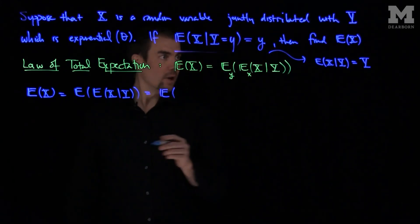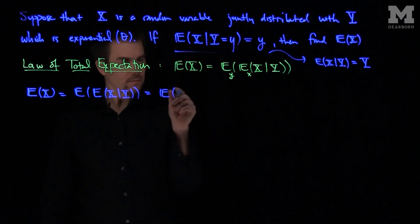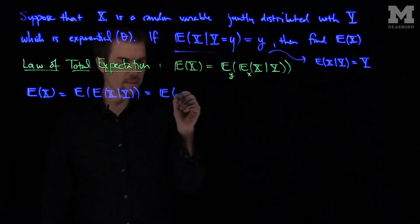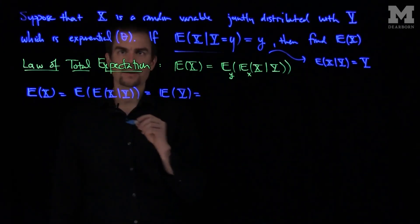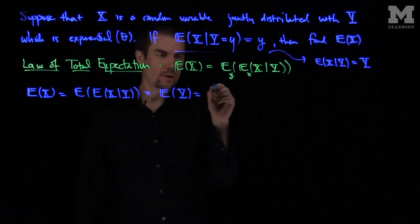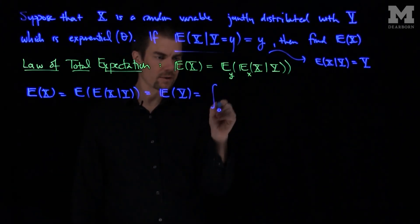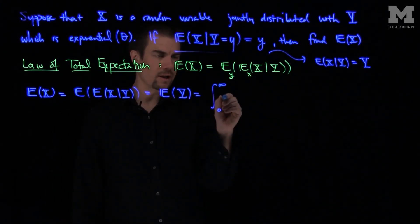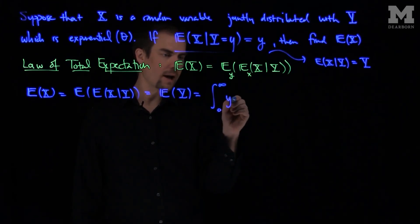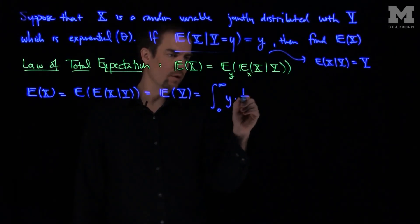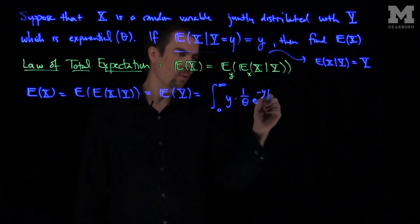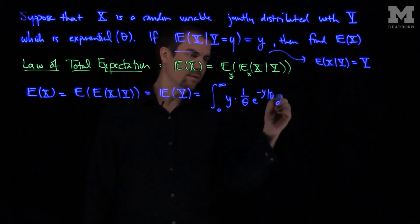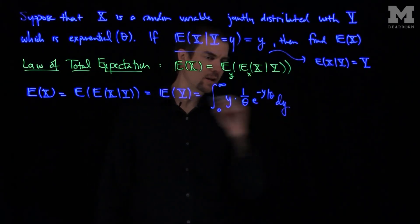So this becomes just the expected value of y, which is the integral from zero to infinity of y times one over theta times e to the negative y over theta dy.